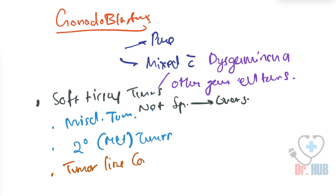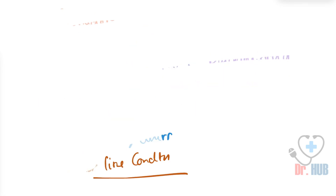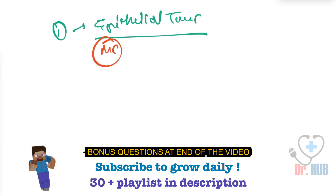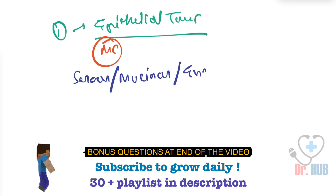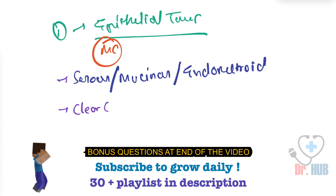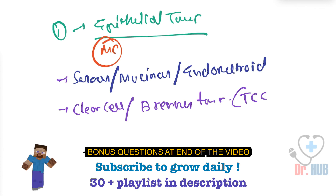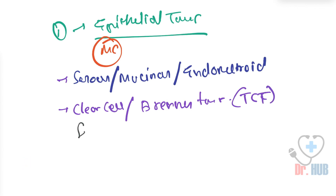Now we'll be answering our questions. The first question was about epithelial tumors. The important point is that it is the most common. The tumors under it include: serous tumors, mucinous tumors, endometroid tumors, clear cell tumors, Brenner's tumor — which involves transitional cell tumors — seromucinous, and undifferentiated carcinoma.